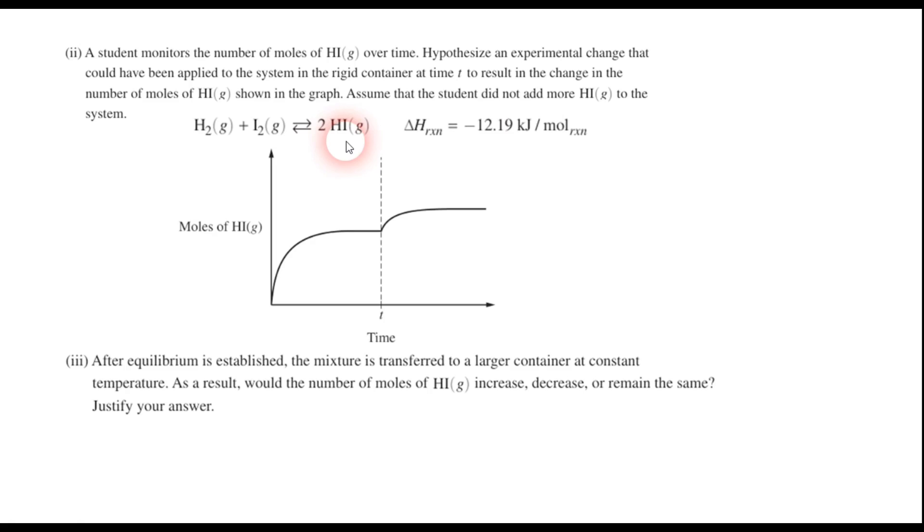Somehow, we shifted the equilibrium toward the product side. And we could do that by adding reactants. And so we could have added some hydrogen gas. We could have added some iodine gas. Either of those would have worked to raise the amount of hydrogen iodide gas that was present in the container. Now, there's something else that we could have done as well. Notice that this reaction has a negative value for delta H. That tells us that this reaction is exothermic.